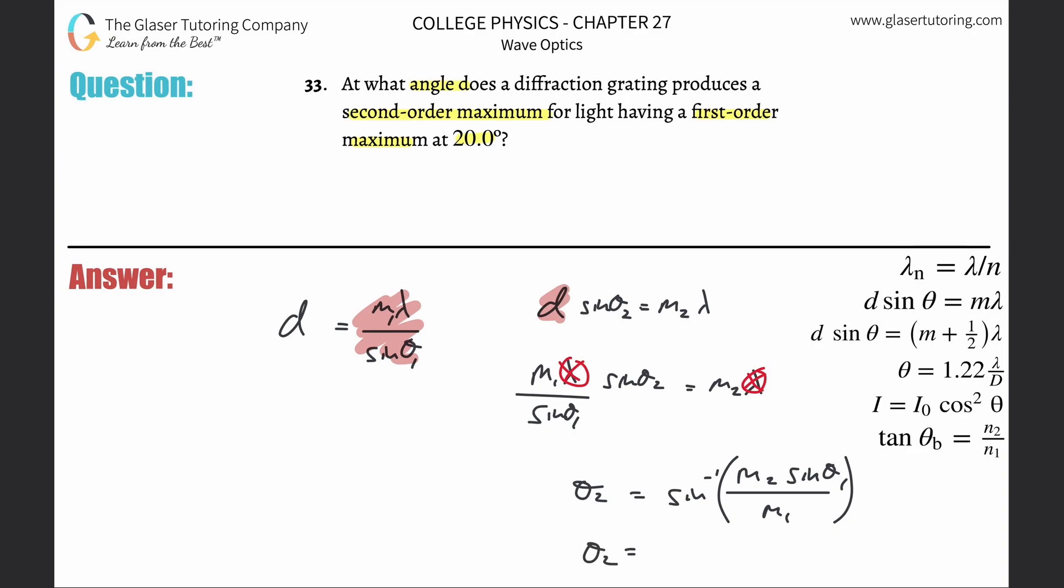We've got to plug in the numbers now. Just plug the variables in the calculator and tell me what you get. This is going to be m2—that's the second order max—and then sine of the first angle. They told us the first order maximum occurs at 20 degrees, so that's why it's sine of 20, divided by m1, which is just the order for the first, which is just 1. So inverse sine of 2 multiplied by sine of 20.